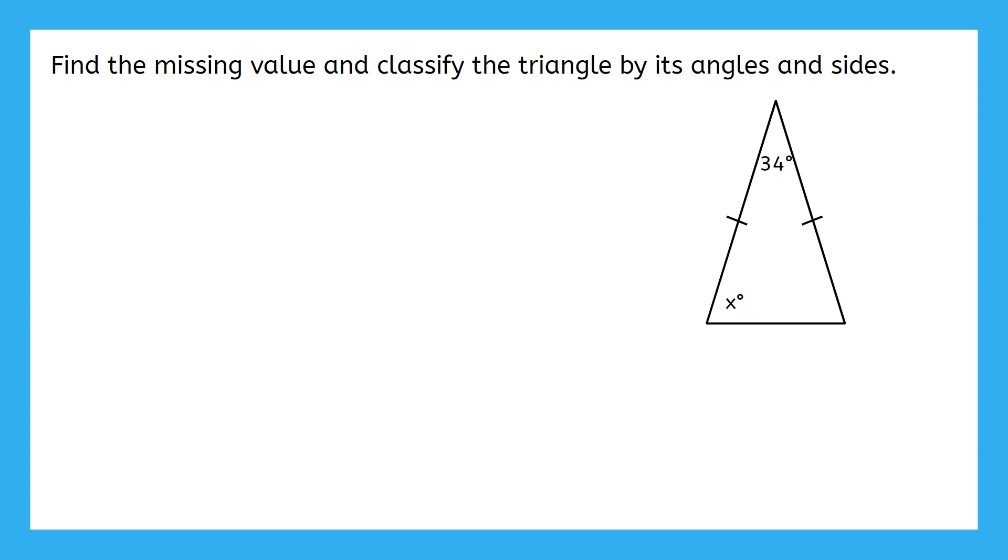In our second example, we're asked to find the missing value and classify the triangle by its angles and sides. Let's find the missing value x first. We know that these angles are the same because the sides across from them are the same. That's what the isosceles triangle theorem from earlier told us. Can you solve for x? Try it now.